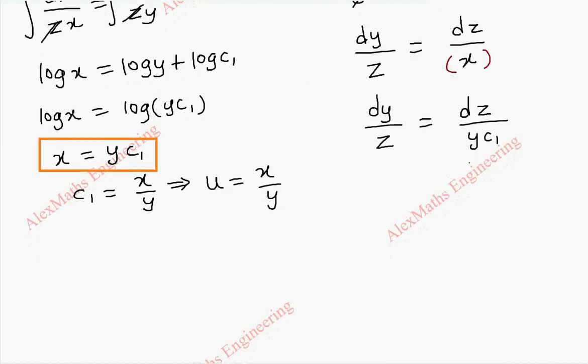We are going to cross multiply. That is, y c1 into dy equal to z dz. Now we got variables separable form. We are going to integrate. C1 is a constant, we keep as it is. Y integration is y square by 2, z is z square by 2 plus constant c2.